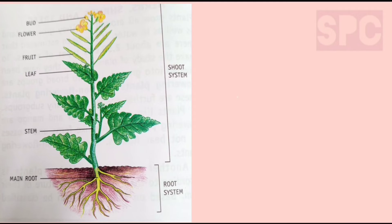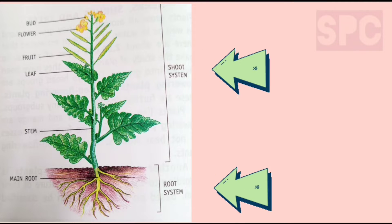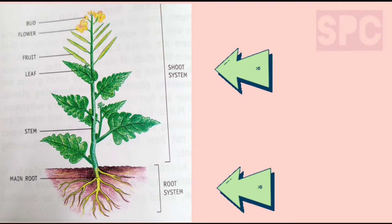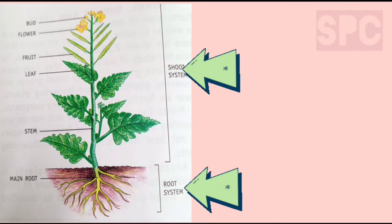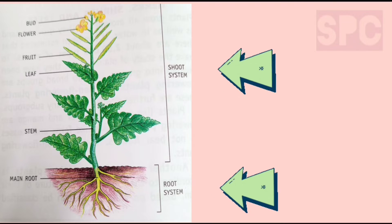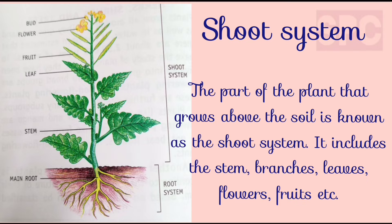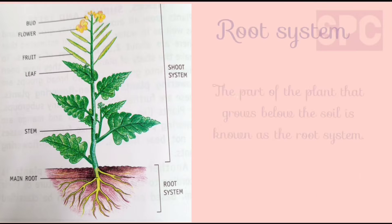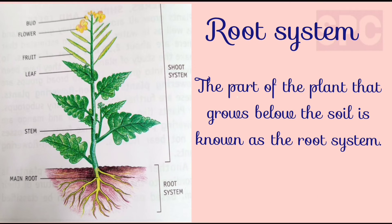All plants have a basic similar structure. The entire body of a plant can be broadly classified into two main systems. One is the root system and the other one is the shoot system. The part of the plant which grows above the soil is known as the shoot system. This comprises of the stem, branches, leaves, flowers, fruits, etc. Whereas the part of the plant that grows below the soil is known as the root system.